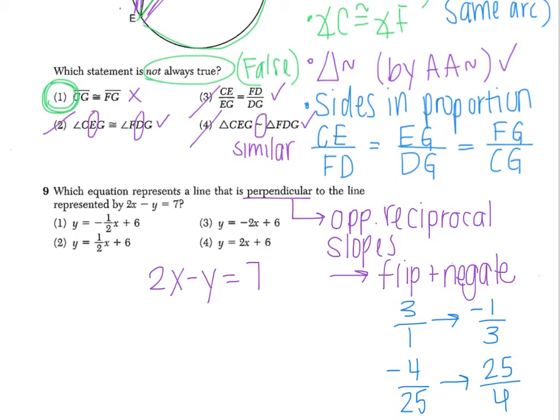So when we look at this equation, I know that it's not in Y equals. So my first step is to get in Y equals. So I'm going to start by bringing the Y to the other side so it becomes positive. So now I have 2X equals Y plus seven. Then I'm going to subtract seven from both sides. So now I have 2X minus seven is equal to Y.